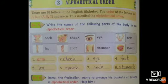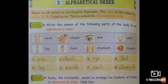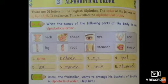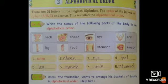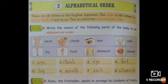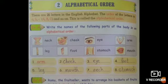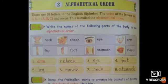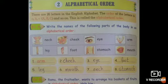Exercise A: Write the names of the following parts of the body in alphabetical order. These are the names we have to arrange in alphabetical order. The body parts given are: Arm, Leg, Foot, Stomach, Mouth. We will arrange these in alphabetical order.